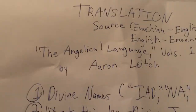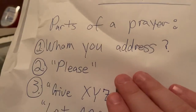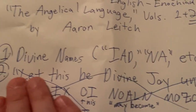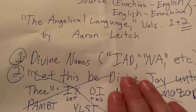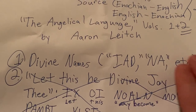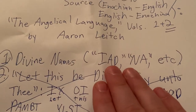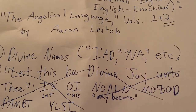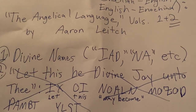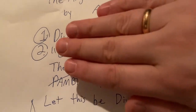So where do you start? First, who are you going to address? You're going to address God, so you need a name of God in Enochian — and there are a lot of them, because you may be calling out various aspects. 'Yad' means God, 'Ene' means Lord — it's sort of like Adonai.